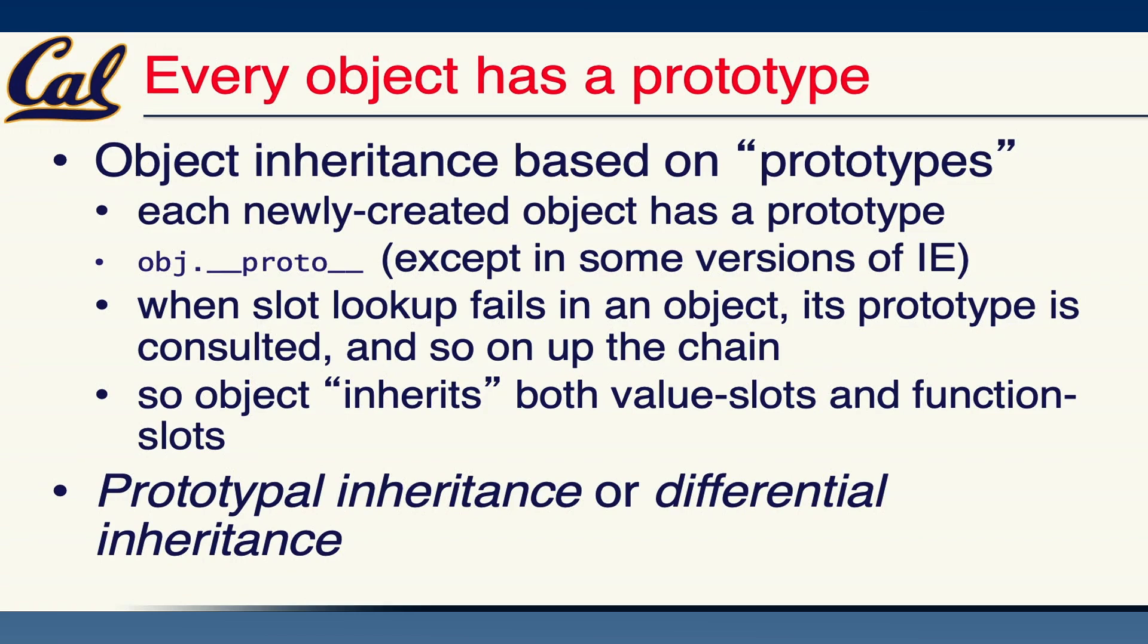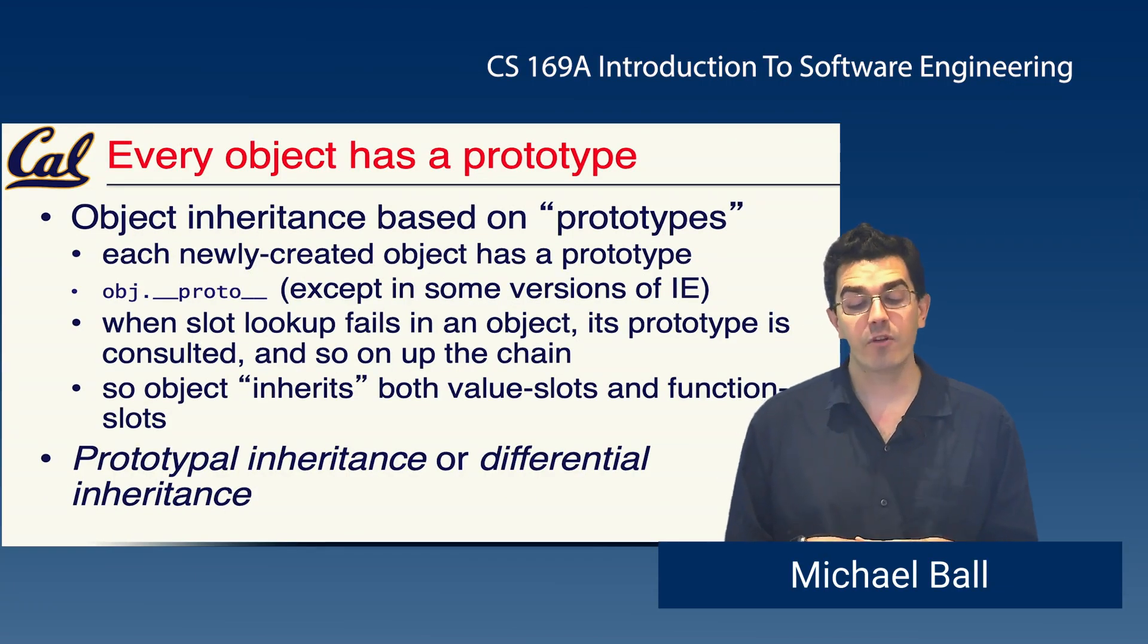Object inheritance in JavaScript is based on a system called prototypal inheritance, where every one of these objects, whether you declare it as a class or not, has a prototype which is commonly defined in the browser as this double underscore proto attribute. This proto attribute allows JavaScript to look up attributes or properties from parent objects, and so in JavaScript, most of the time this is done behind the scenes, but an object can inherit its prototype, which includes both its values and its functions, from another object.